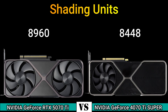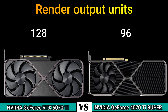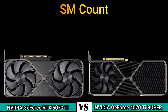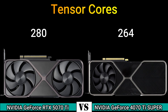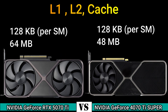Shading units: 8960 and 8448. Texture mapping units: 280 and 264. Render output units: 128 and 96. SM count: 70 and 66. L1 cache: 128 KB per SM (64 MB total) and 128 KB per SM (48 MB total).